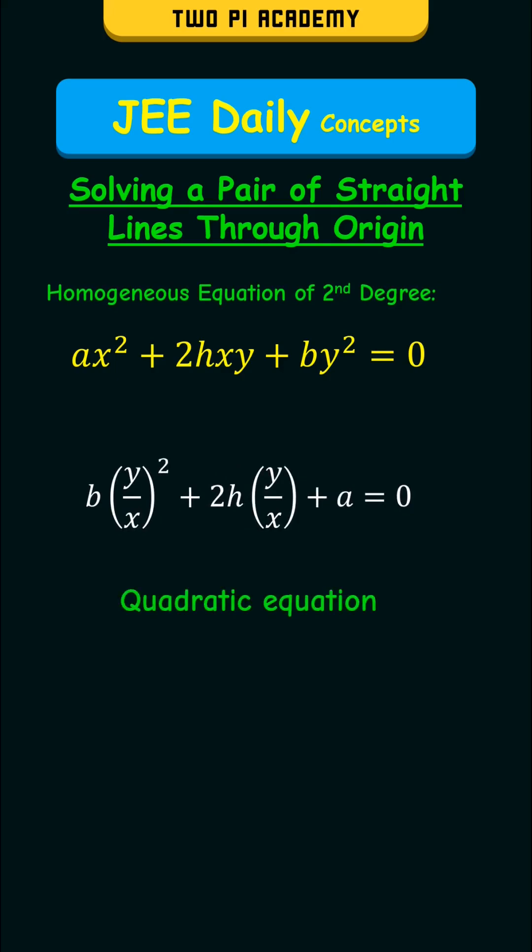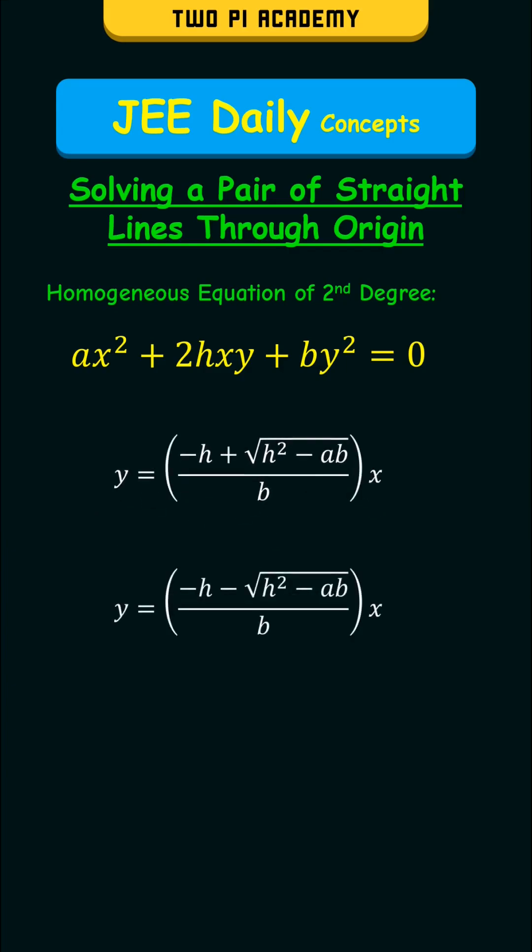Now you can solve this by either using factorization method or the quadratic formula which uses y/x = (-h ± √(h² - ab))/b. That is the following two straight lines.